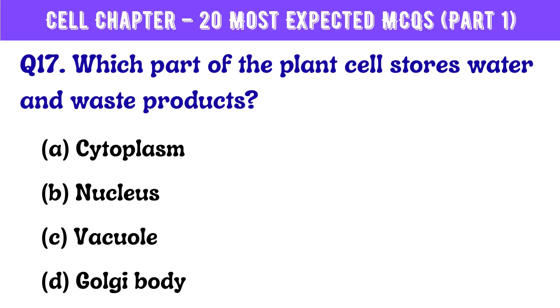Question number 17. Which part of the plant cell stores water and waste products? Correct answer is option C: Vacuole.